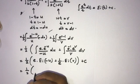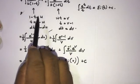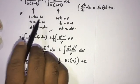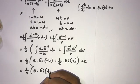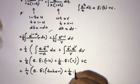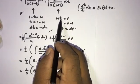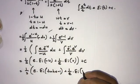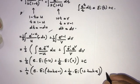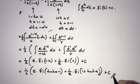Substituting back: u equals 1 minus t so minus u equals t minus 1, and t equals hyperbolic tan(x), giving Ei(hyperbolic tan(x) minus 1). Also v equals 1 plus t, so Ei(1 plus hyperbolic tan(x)). The final answer is: (1 over 2) times [e times Ei(tanh(x) minus 1) plus (1 over e) times Ei(1 plus tanh(x))] plus C. If you like this video, please subscribe to this channel. Thank you for watching.